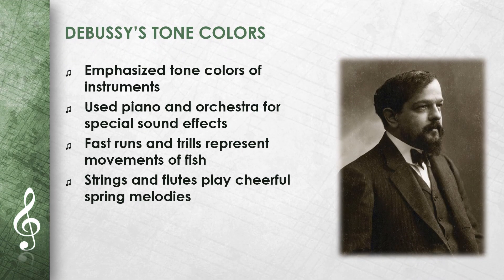In Images, Debussy placed great emphasis on the tone colors of the instruments. He used the piano and the orchestra to achieve special sound effects. For example, in Poissons d'or, he uses fast runs and trills to represent the movements of fish. In Rondes de Printemps, he has the strings and flutes play cheerful spring melodies. These tone colors are an important feature of his music.